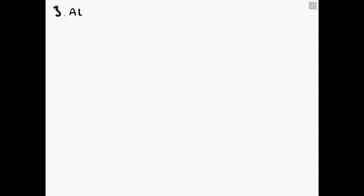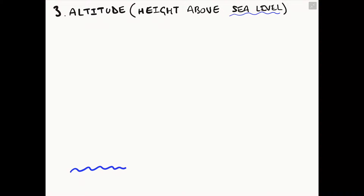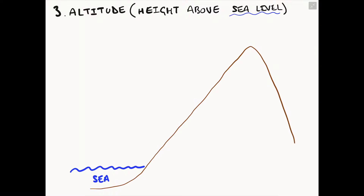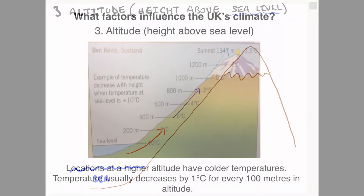The third factor which influences the UK's climate is altitude, or height above sea level. Locations at high altitude or in mountainous regions experience colder temperatures at the summit. On average, temperatures decrease by 1 degree Celsius for every 100 metres in altitude above sea level. This is why the tops of mountains are always the coldest.